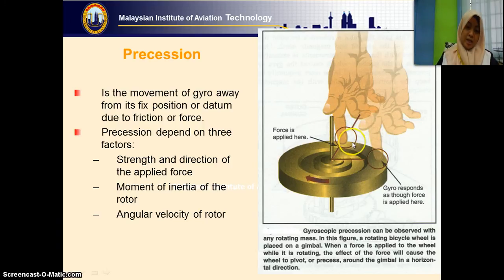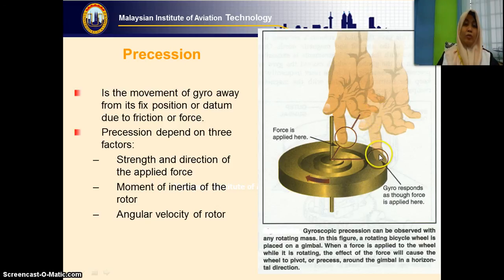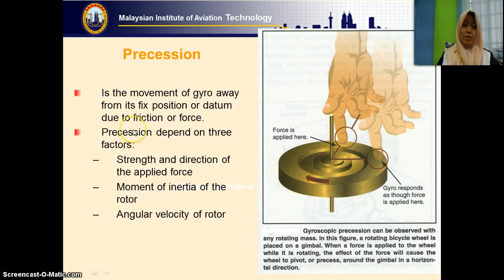For example, if the gyro rotates in a clockwise direction and we apply force at one point, 90 degrees from that point in the direction of rotation is where the precession occurs. Precession always acts 90 degrees in the direction of rotation — it cannot act elsewhere. This precession depends on three factors: the strength and direction of the applied force. Normally, the higher the strength being applied, the higher the precession.